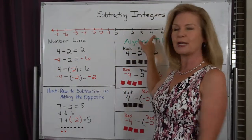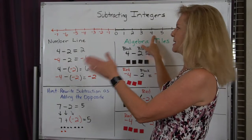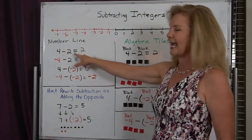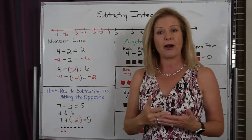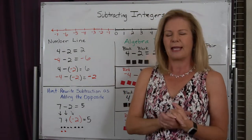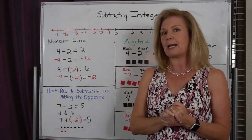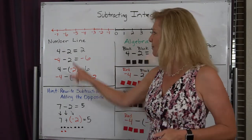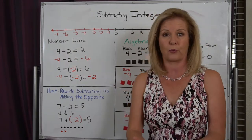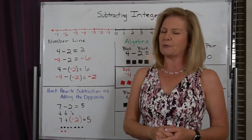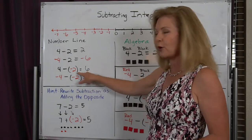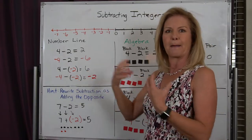With subtraction, I always face towards the smaller numbers. The second number tells me how far I either walk forward or backwards. If I'm subtracting a positive number, or a black number, I'm going to walk forward. If I'm subtracting a negative number, or a red number, I'm going to walk backwards.